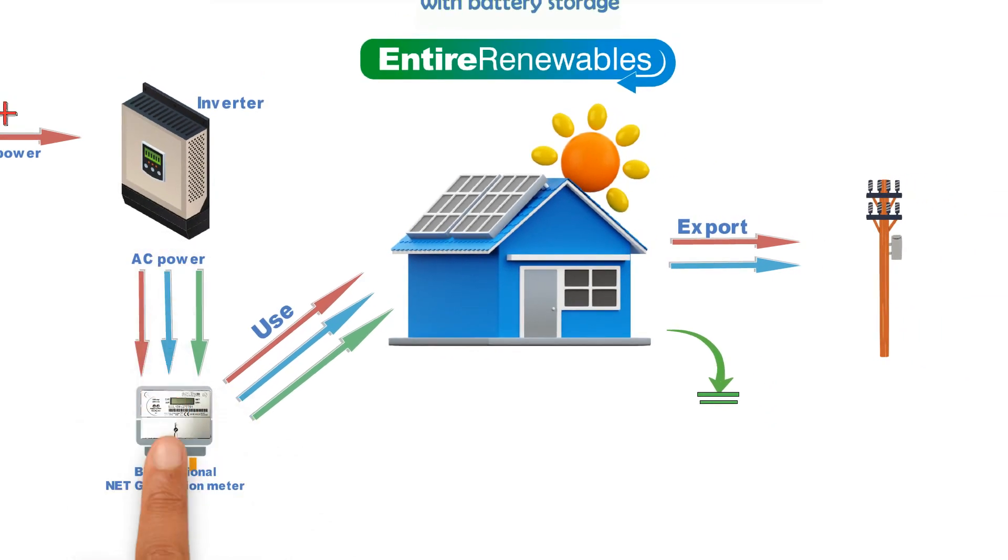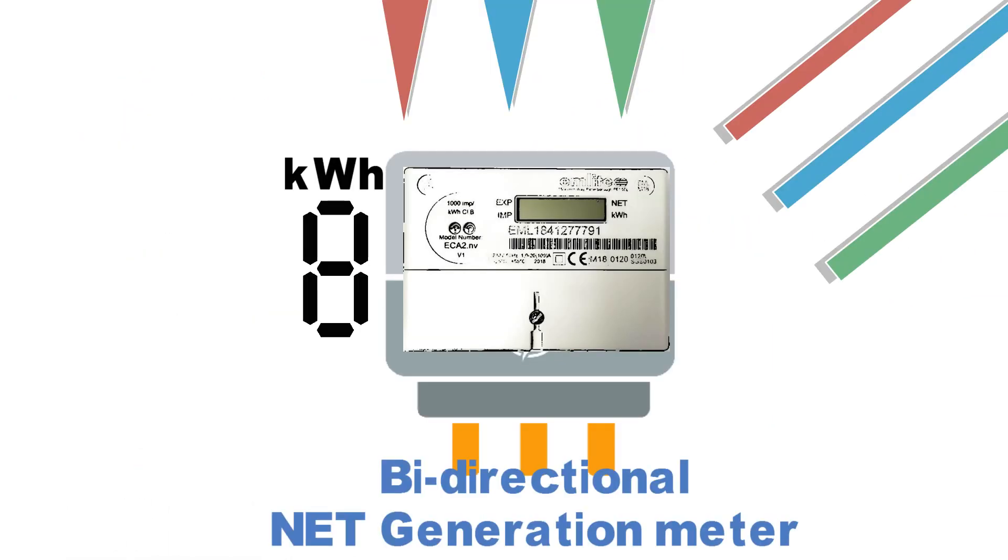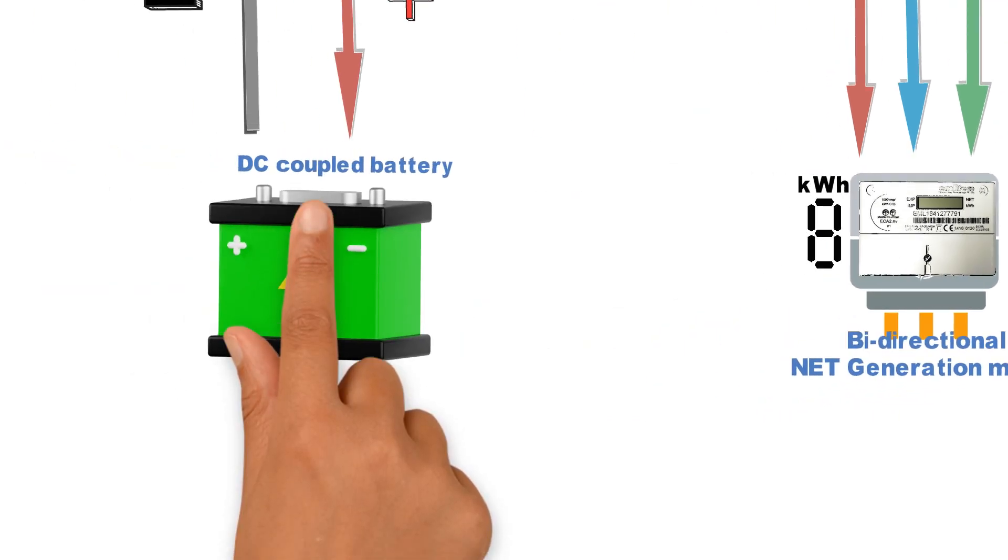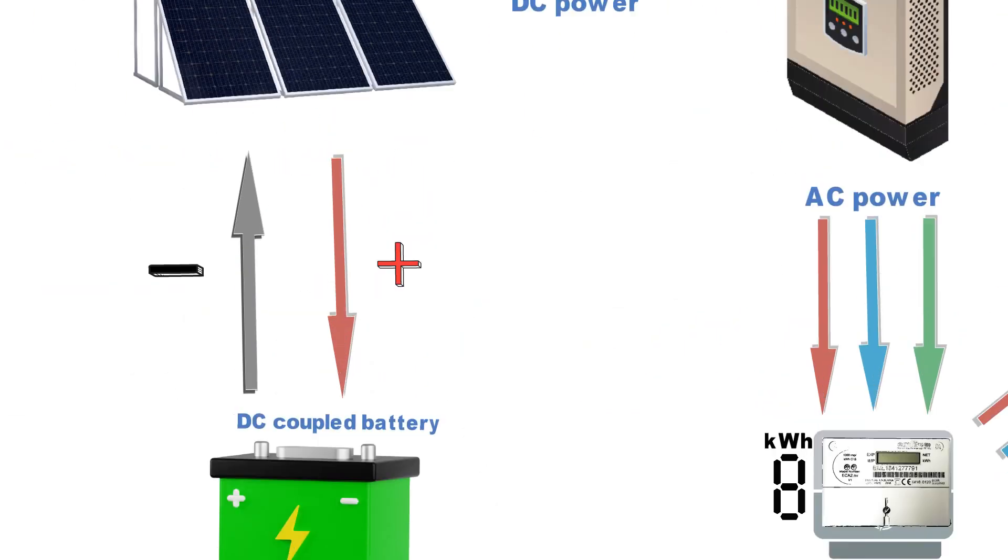The meter clocks up the kilowatt hours that the solar panels have generated. Some of the solar power may still be stored in the battery.